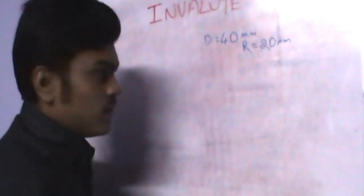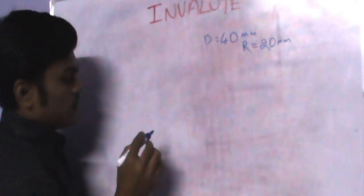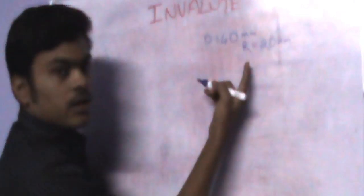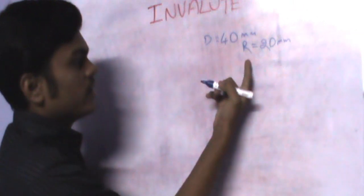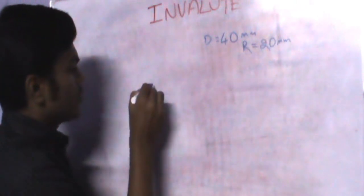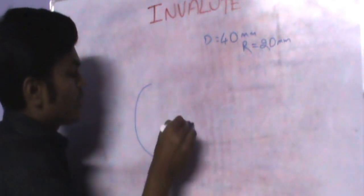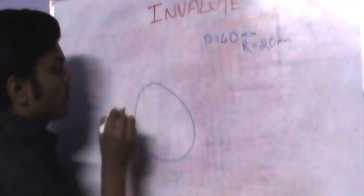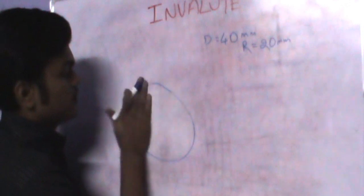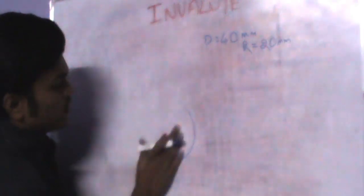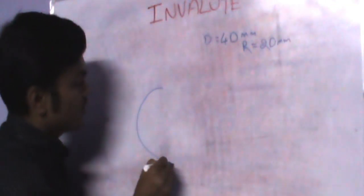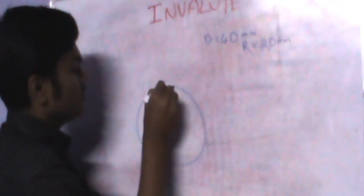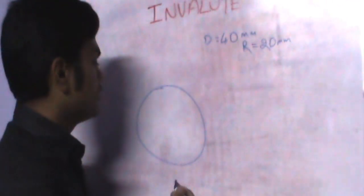Step 1: Draw a circle. If the radius is given directly, use your compass to draw the circle of that radius. Here we draw a circle of radius 20 mm. If the diameter is given, just convert it to the radius and then draw the circle.